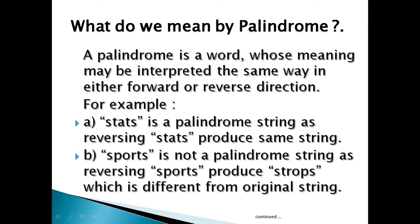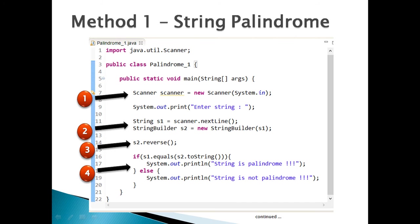A palindrome is a word whose meaning may be interpreted the same way in either forward or reverse direction. For example, 'stats' is a palindrome string, as reversing 'stats' produces the same string. 'Sports' is not a palindrome string, as reversing 'sports' produces 'strops', which is different from the original string.